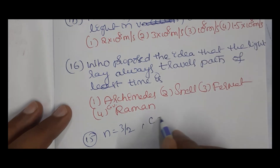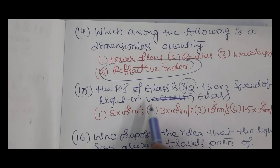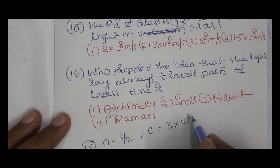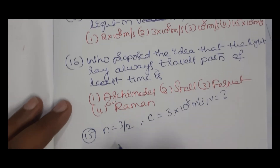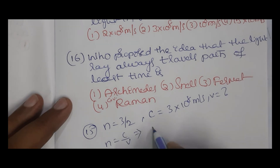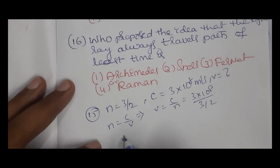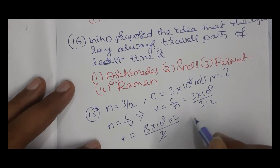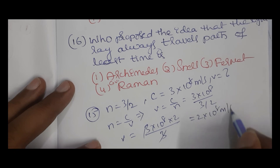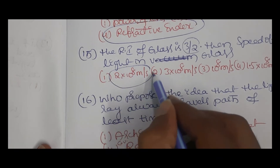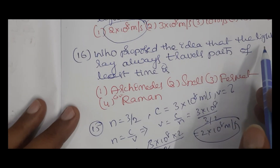Speed of light in vacuum c = 3 × 10⁸ m/s. We want to find speed in glass v. Using n = c / v, we get v = c / n = (3 × 10⁸) / (3/2) = 3 × 10⁸ × (2/3) = 2 × 10⁸ m/s. So the speed of light in glass is 2 × 10⁸ m/s.